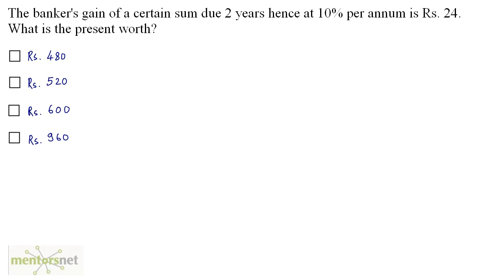The banker's gain of a certain sum due 2 years hence at 10% per annum is Rs. 24. What is the present worth? The formula for calculating the banker's gain is: banker's gain equals banker's discount minus true discount. We have been given the banker's gain as Rs. 24. The banker's discount is the simple interest on the amount. So let the amount be A.